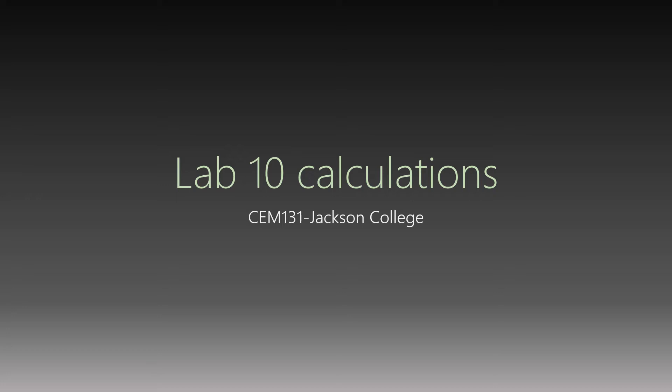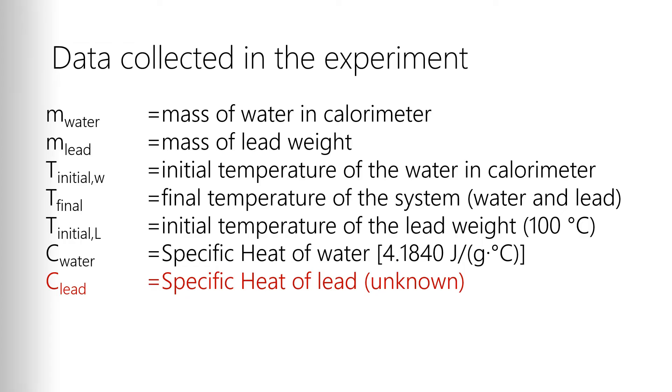This is a short video to allow you to figure out how to do the calculations in lab 10, which is a specific heat of a metal lab. There's a variety of data points we're going to collect in this laboratory. First off, we need both the mass of the water within the calorimeter and the mass of the lead weight. You can find those on the JetNet page.